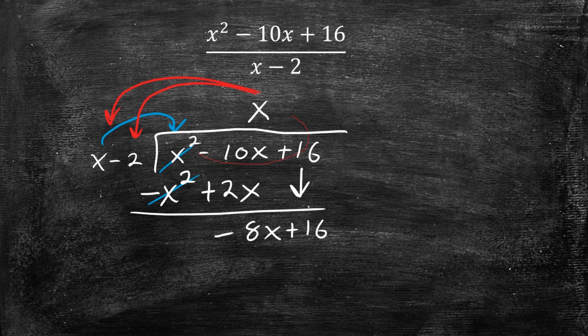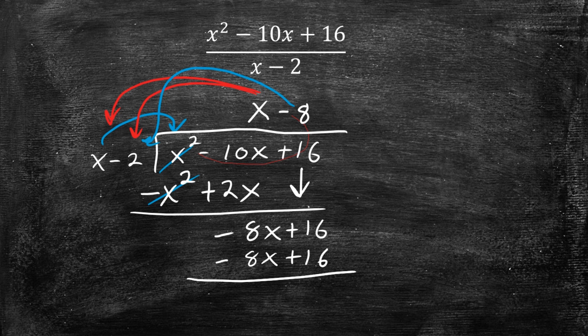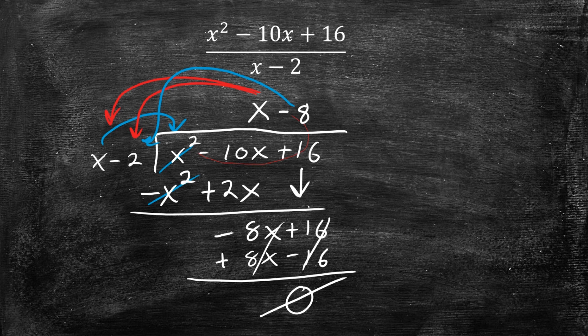x goes into negative 8x negative 8 times. Negative 8 times x is negative 8x, and then negative 8 times negative 2 is positive 16. And now what we want to do is subtract these. So that means we change the signs. So that's going to be a positive 8x, and then this one is now going to become a negative 16. And when we do that, these cancel, these cancel, and you have no remainder.